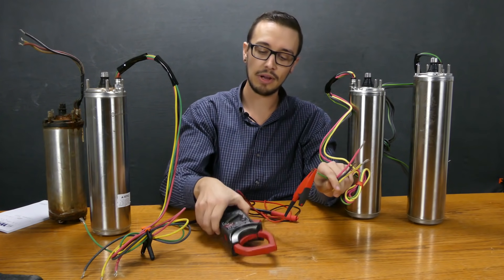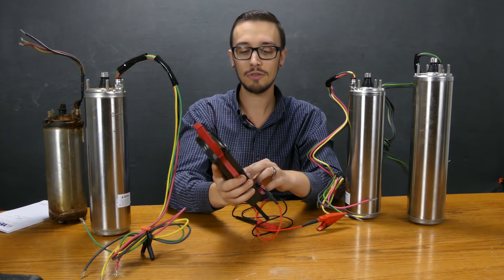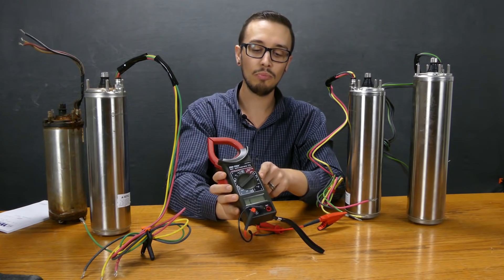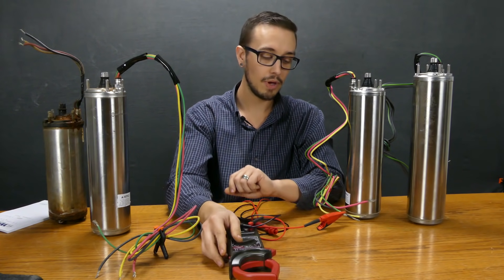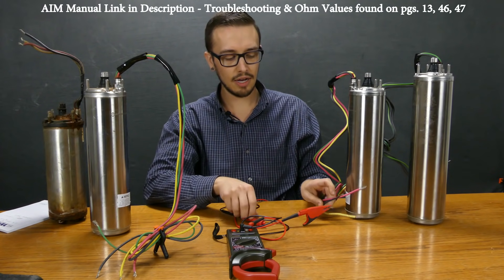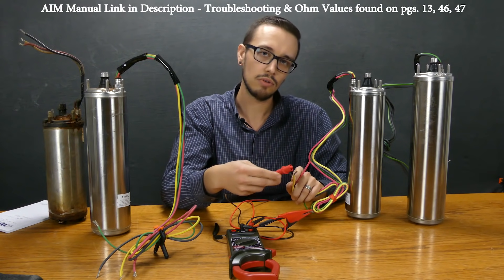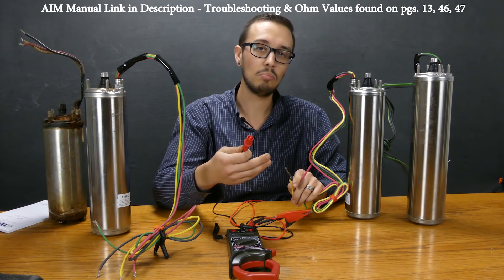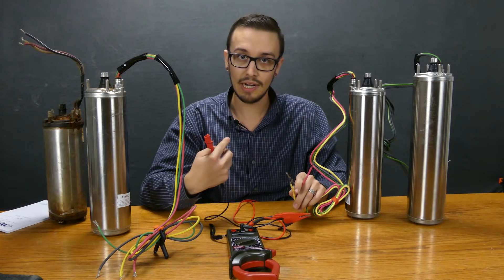For this test, this meter actually isn't ideal. I have the ohm meter set to the highest setting - the two million ohms. What we're looking for - and there's a chart in that AIM manual that's going to actually tell you - but basically a number above 500,000 ohms, that's the threshold for pull it out and replace it.